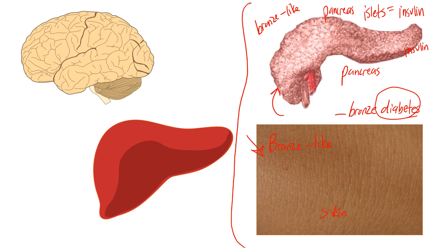With the pancreatic islets damaged from iron deposition, no insulin is released, so blood glucose cannot be lowered. On an exam, you may see a patient with bronze-colored skin appearing out of nowhere across their whole body, combined with a suddenly elevated blood glucose despite no prior history of diabetes — that presentation should make you think of hemochromatosis.